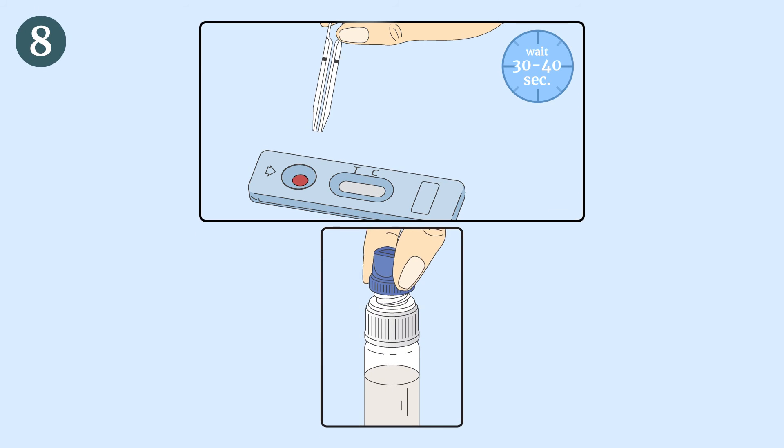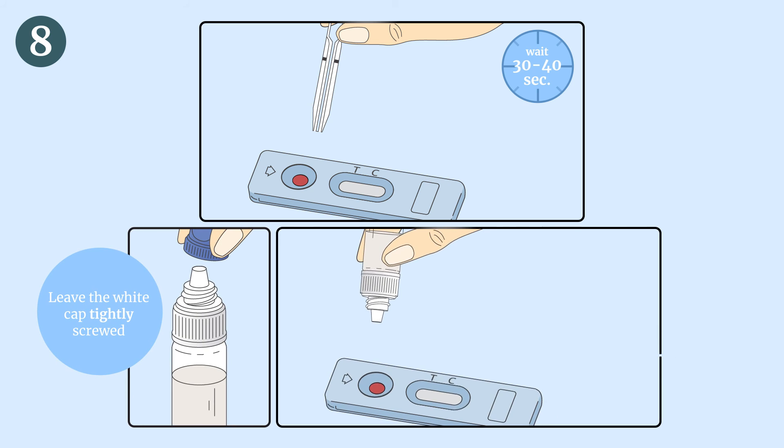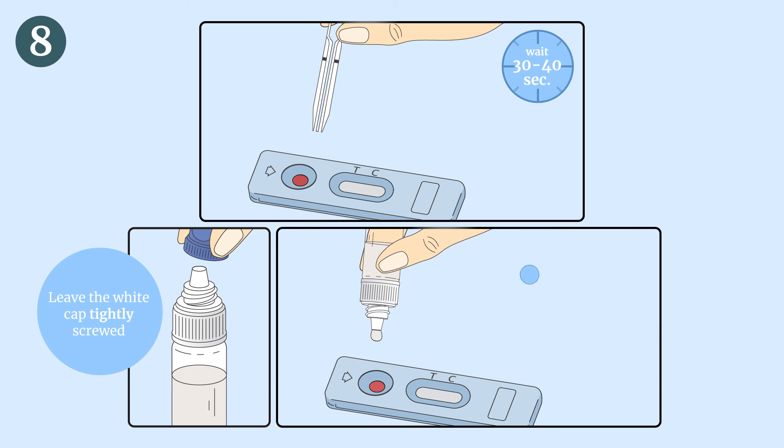Unscrew the blue cap of the diluent dropper bottle, and by holding the dropper bottle vertically, slowly add exactly 4 drops in the sample well of the device with an interval of 2 to 3 seconds between each drop.